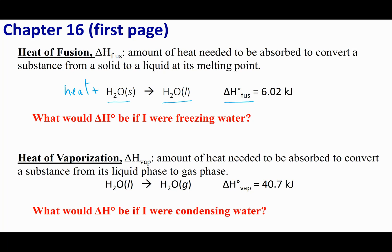If I want to do the reverse process — freeze liquid water — that's essentially reversing the equation. Flipping the equation means I just change the sign of ΔH, so the ΔH of freezing water is −6.02 kJ. Going from a liquid to the gaseous state is called the heat of vaporization, and the reverse process — condensation of water — would be −40.7 kJ.